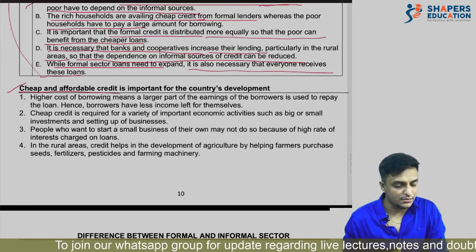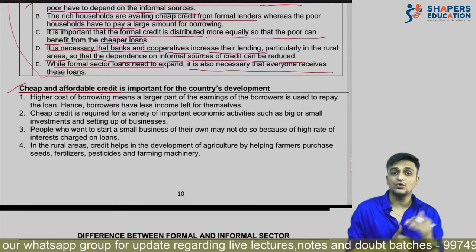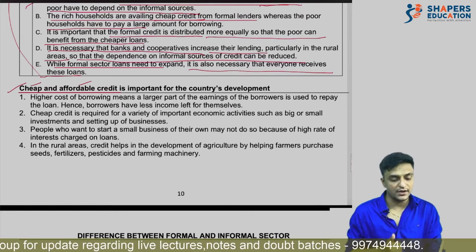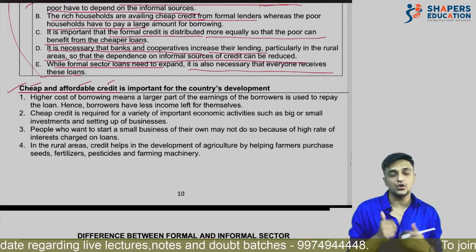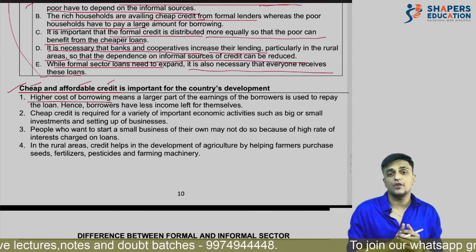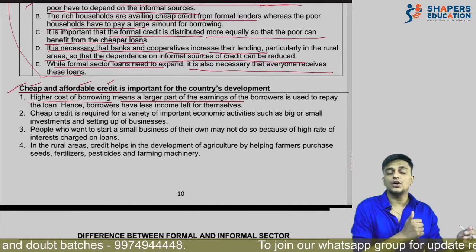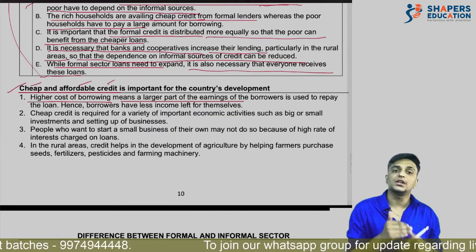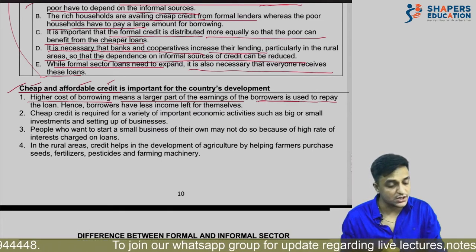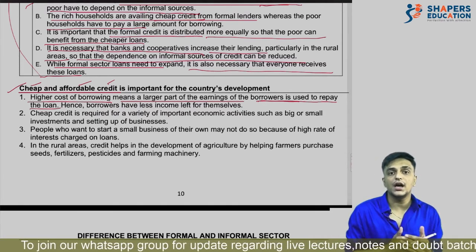Cheap and affordable credit is very important. Poor people have to pay a higher rate of interest, which causes them losses. If the cost of borrowing is very high, it means a larger part of the borrower's earnings will go toward paying interest. The larger the part of earnings used to repay interest, the less income is left for the borrower.